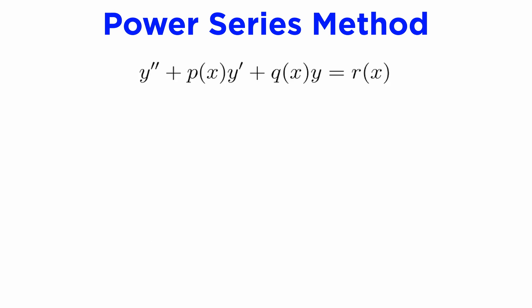For a second order DE, we will write this as y double prime plus p(x) times y prime plus q(x) times y equals r(x).